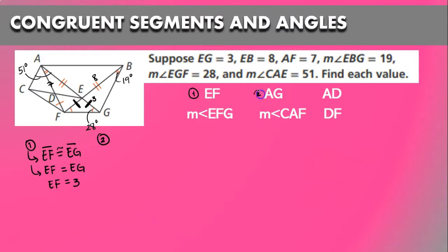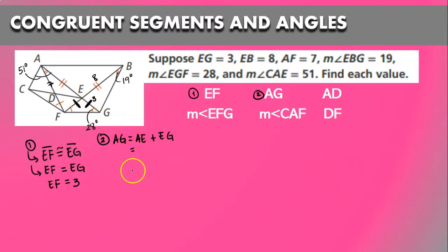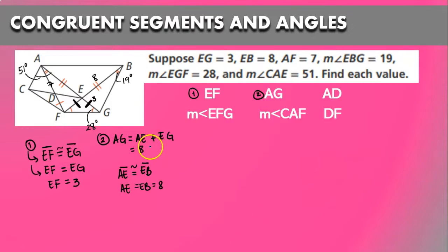Next we have AG. We know that AE is congruent with EB because they have the same tick mark, so AE equals EB, which is 8. Since AE is 8 and EG is 3, AG equals AE plus EG, which is 8 plus 3 equals 11.